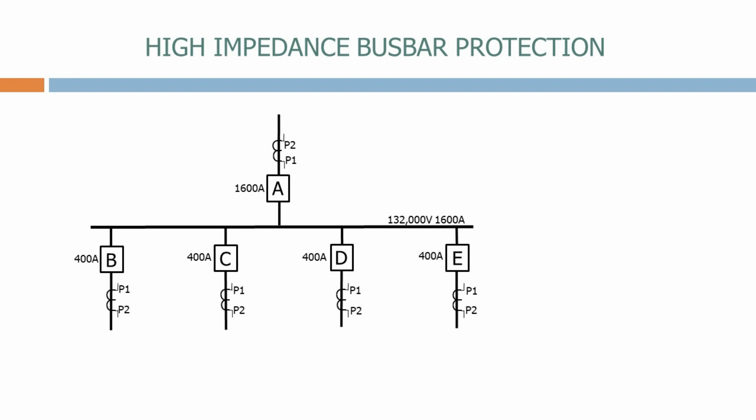As usual, the P1 terminal of the current transformer faces the circuit breaker. One of the key elements of the high impedance scheme is that all of the current transformers must have the same ratio.